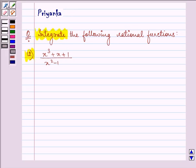Now here, the function given to us is x³ + x + 1 over x² - 1. The integrand is not a proper rational function.